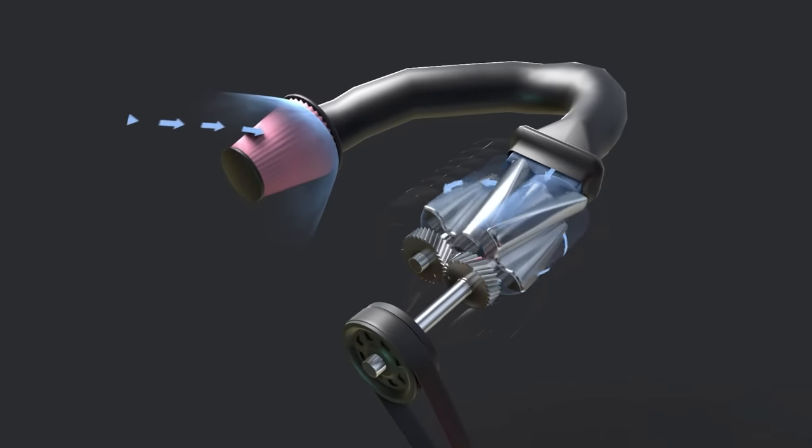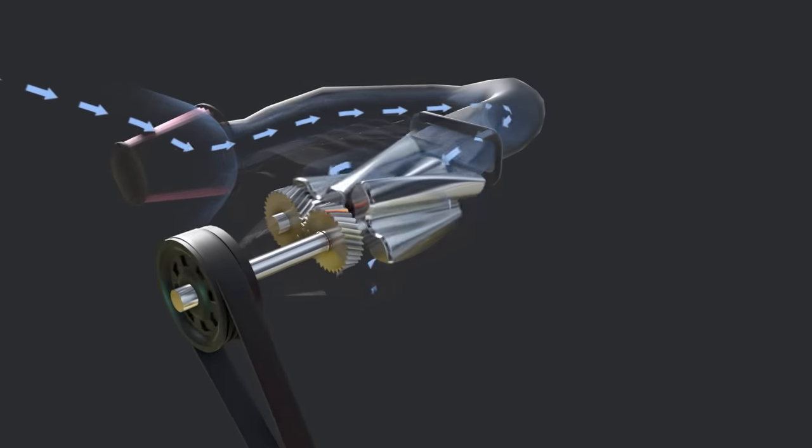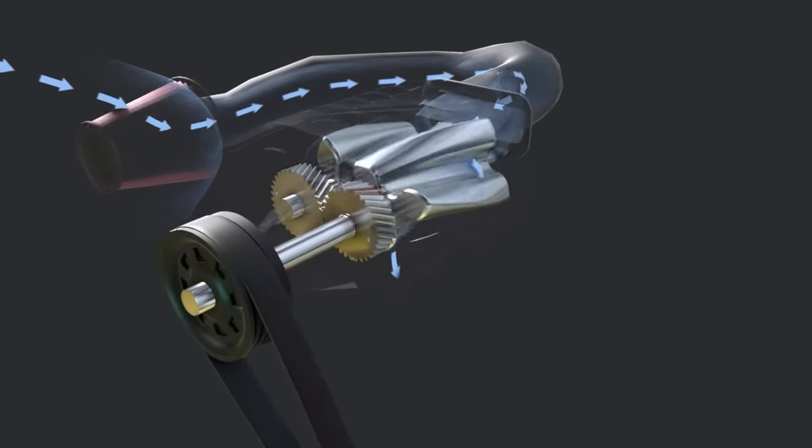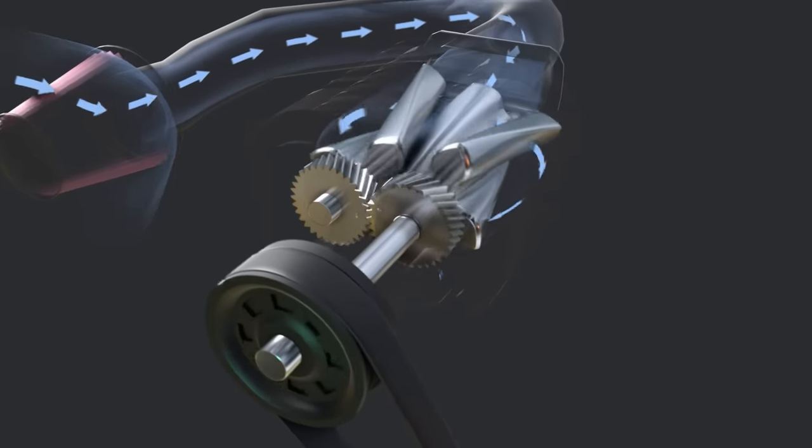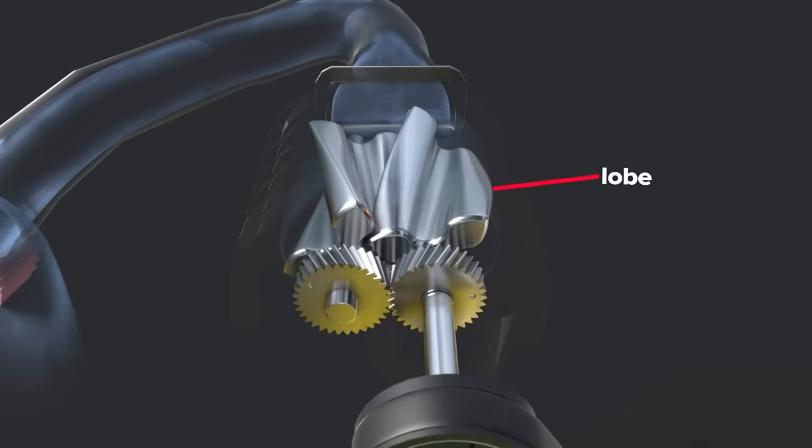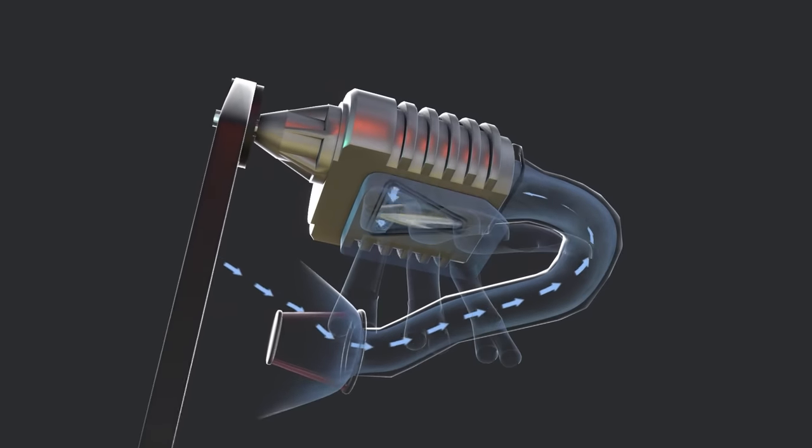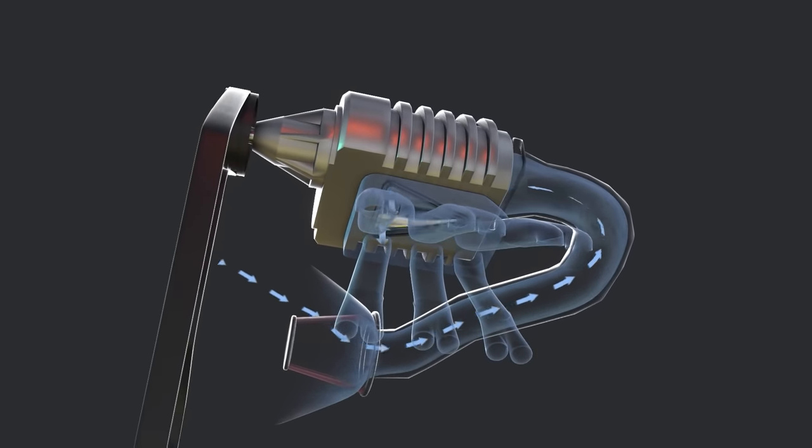Outside air enters through the air filter and intake pipe. Interlocking rotors force air through the supercharger. The long fins or ridges that span the length of the rotor shaft are called lobes. Air exits the supercharger through a specially shaped discharge port at the bottom of the housing.